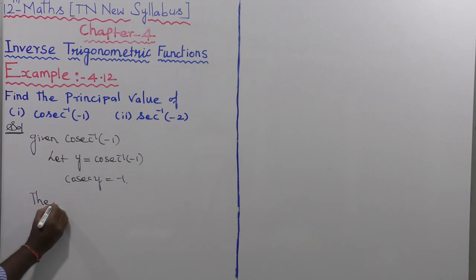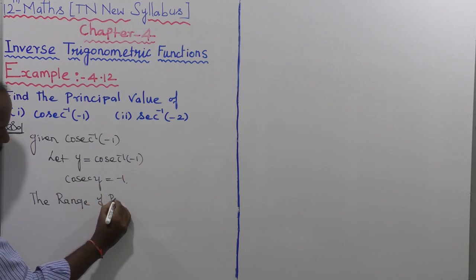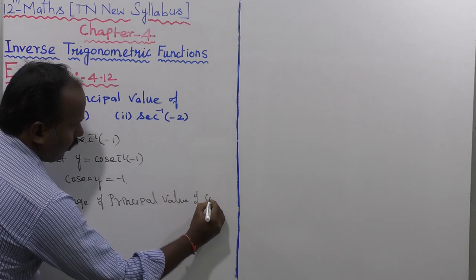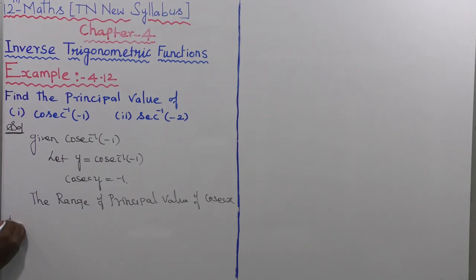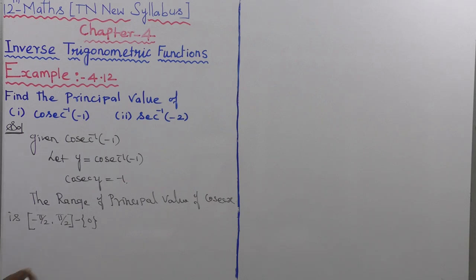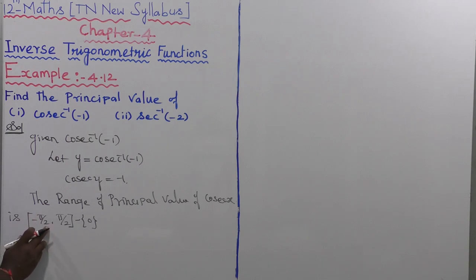The range of the principal value of cosecant x is the closed interval from minus pi by 2 to plus pi by 2, except the value 0. This is because cosecant of 0 is equal to infinity, making it a discontinuous function. So the principal values of cosecant inverse of x lie in the closed interval minus pi by 2 to plus pi by 2, except 0.